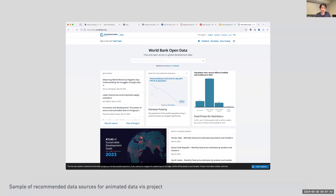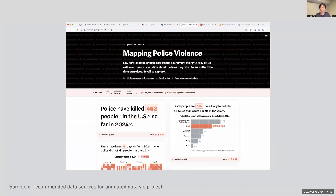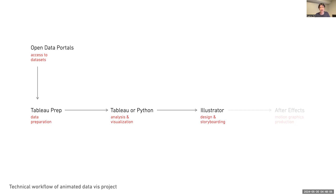Students were free to use publicly available data sets from reliable sources. Once they selected a data set, they would prepare the data through Tableau Prep — cleaning it by identifying specific categories or variables needed for analysis and reformatting it if necessary. Then they would take the cleaned data to Tableau Desktop, or a Python script if proficient with programming, to analyze and visualize the data. This is where students test hypotheses that form the backbone of their stories. The rough graphs are then imported into Illustrator to polish and storyboard animations, and finally imported into After Effects to produce the animation.